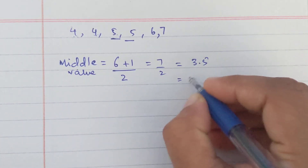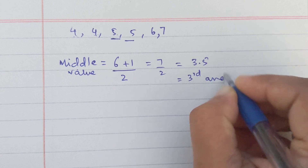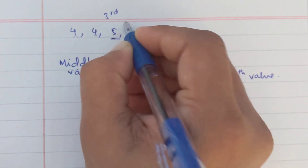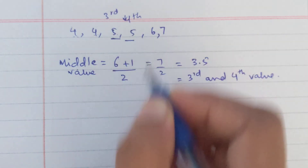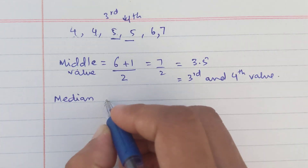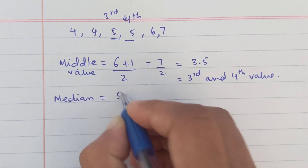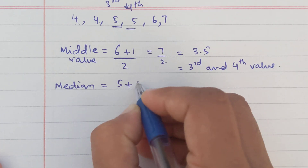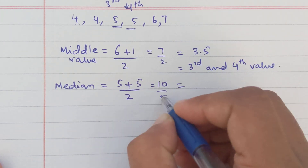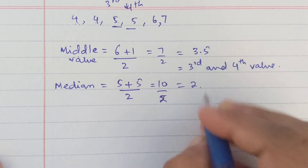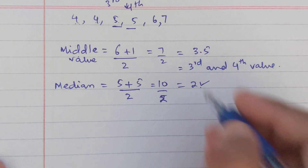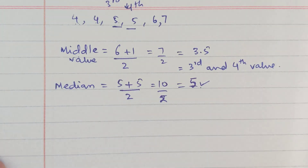The 3rd and 4th values are 5 and 5. So to find the median, we add 5 plus 5 and divide by 2, which gives us 5. The median is 5. The mode was 4, but the median is 5.